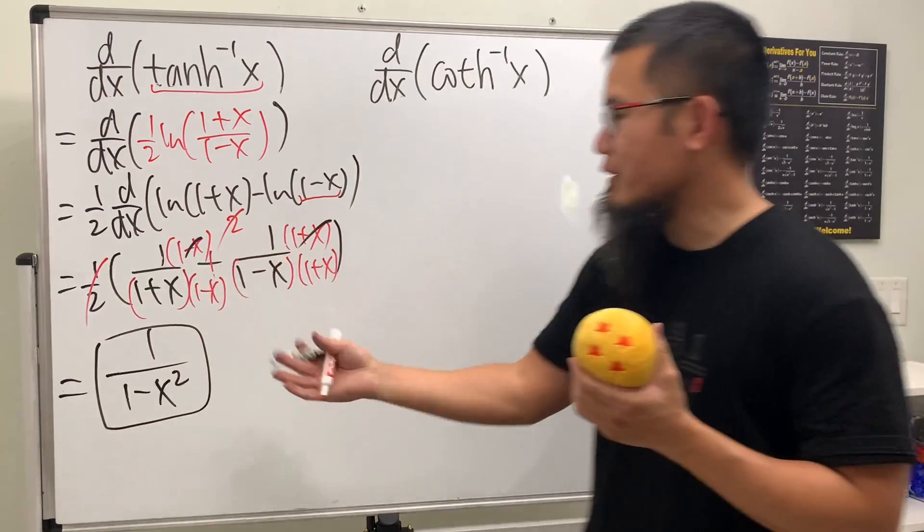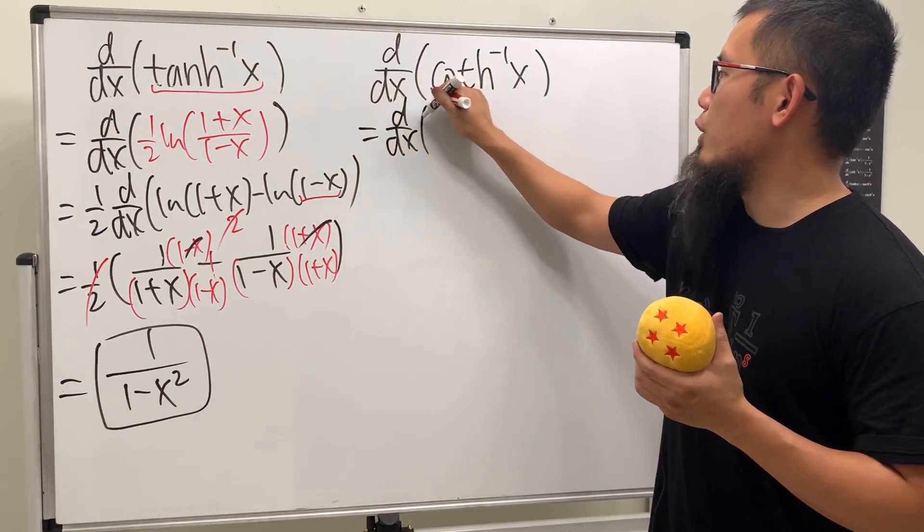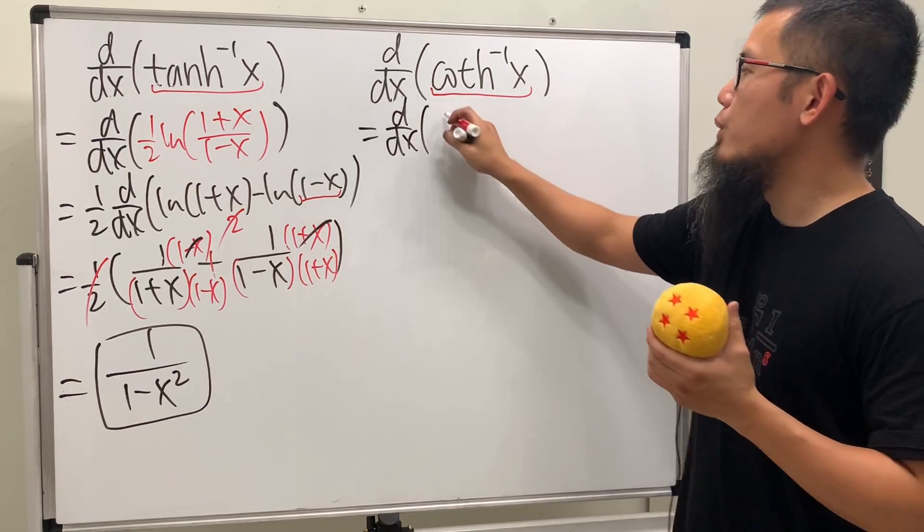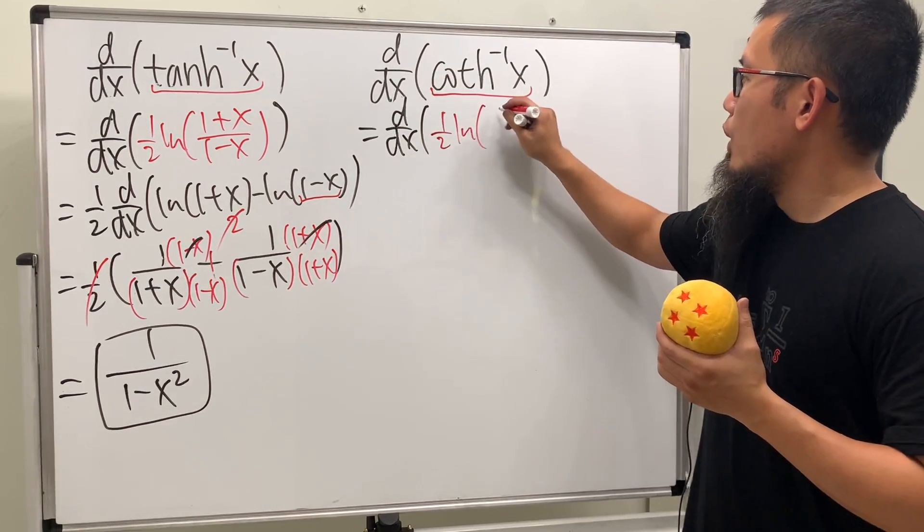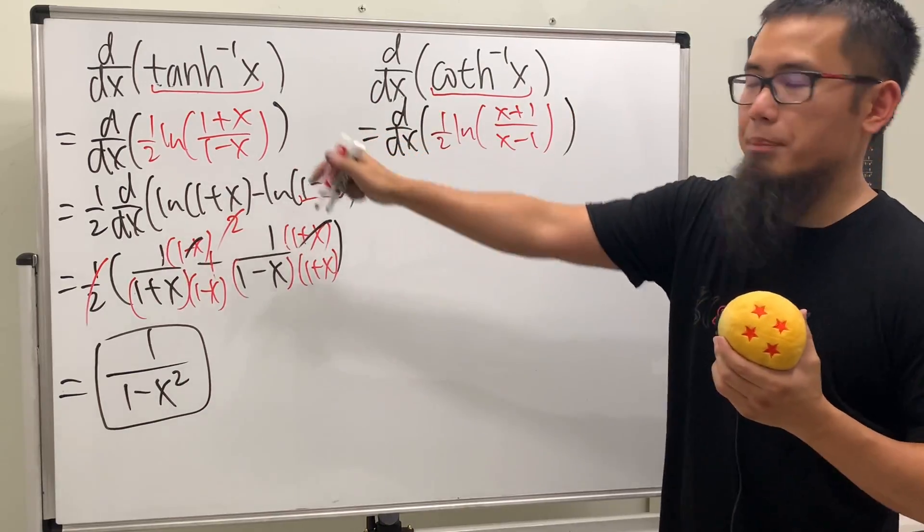Now do the same thing for this guy, which is going to be the d/dx and then look at the ln form for the inverse hyperbolic cotangent, which is 1/2 ln of (x+1)/(x-1). This looks really similar to that, okay, be really careful.